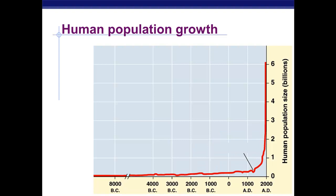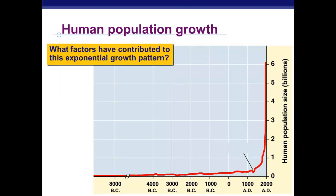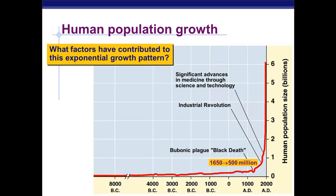Now let's talk about humans. Here's a graph of human population growth up to about 2000 — it shows that human population growth has been exponential. Factors contributing to that include the Industrial Revolution, which brought technology that improved health, food storage, and transport; medical advances that helped cure diseases; and the Green Revolution in the 1900s that helped produce enough food for everybody.